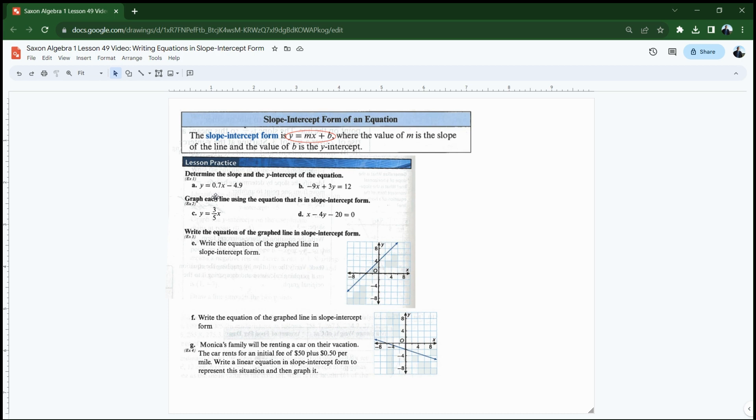Letter a, y equals 0.7x minus 4.9. We need to determine the slope and the y-intercept. Well, the slope is simply the number that's multiplying the x. So in letter a, my slope is 0.7. I'm just going to record exactly the number. If it was negative 0.7, I write negative 0.7. In this case, it's positive 0.7. The y-intercept is whatever number is a constant at the end. This time, it's negative 4.9. This is minus, so I'm going to write negative 4.9. That means it's going to cross the y-axis, 4.9 below the origin.